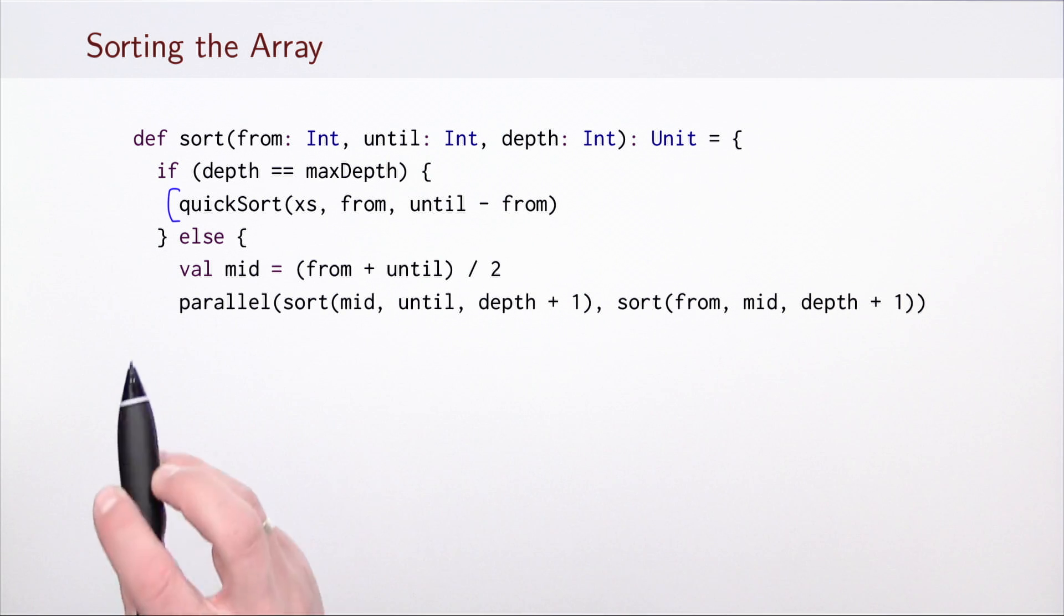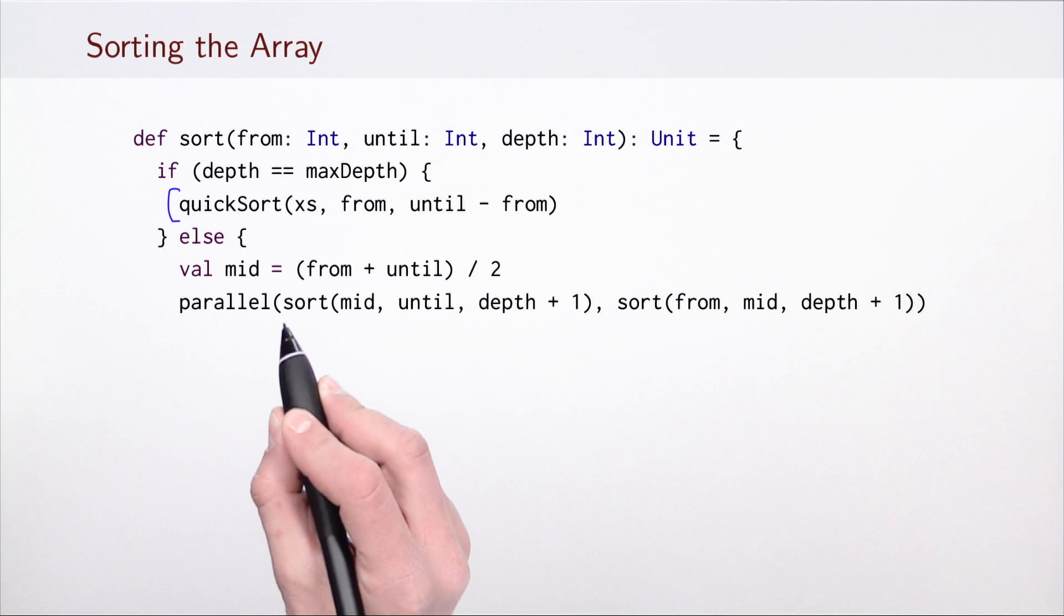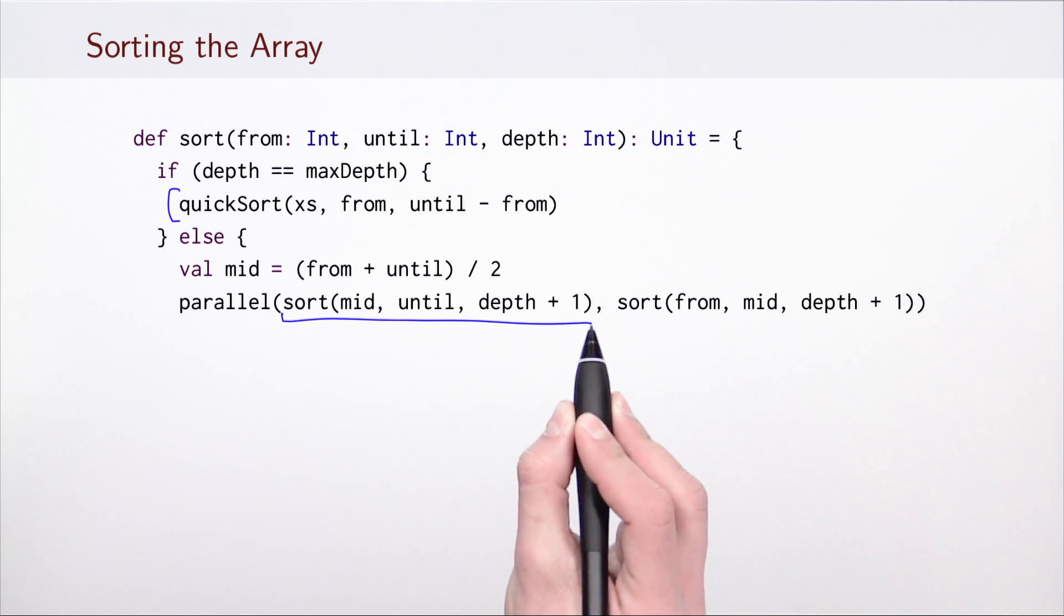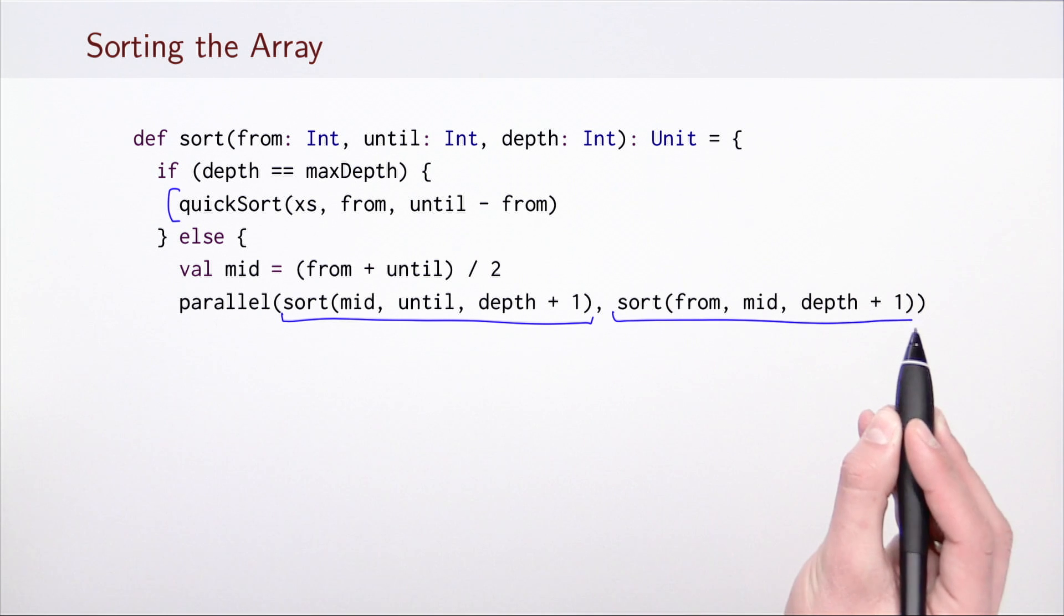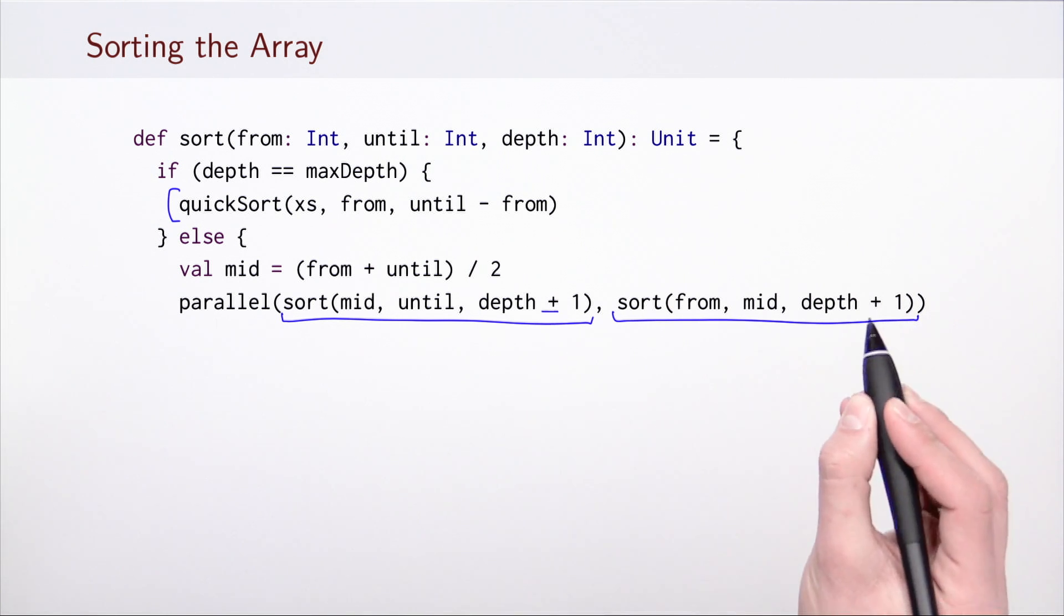The interesting part is when we have not reached yet the base case. We're going to split the array in the middle computing the middle point, and then we're going to recursively sort the first half of the array and the second half of the array. We are of course updating the depth as we proceed to smaller array segments.